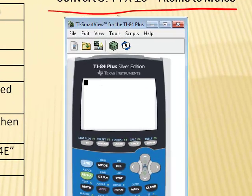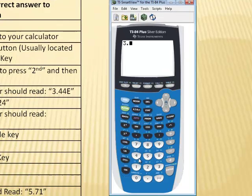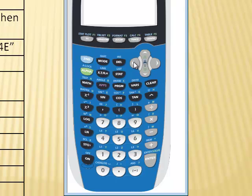So I want to set up this problem and solve it. It says convert 3.44 times 10 to the 24th atoms to moles. I want to first be able to type this number into my calculator. I'm always going to type what they give me into the calculator. So 3.44.